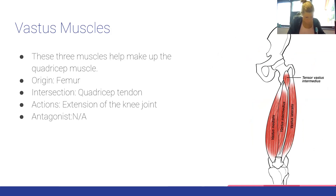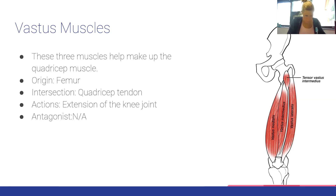The three vastus muscles — vastus lateralis, intermedius, and medialis — make up the bulk of the quadriceps. Origin: femur. Insertion: quadriceps tendon. Actions: extension of the knee joint. No antagonist was identified.